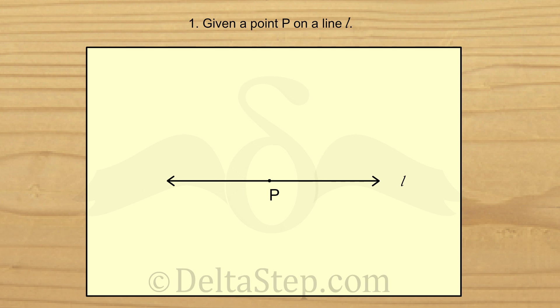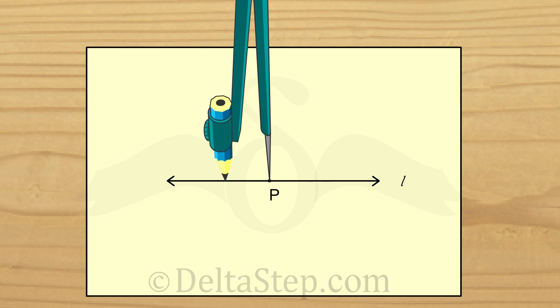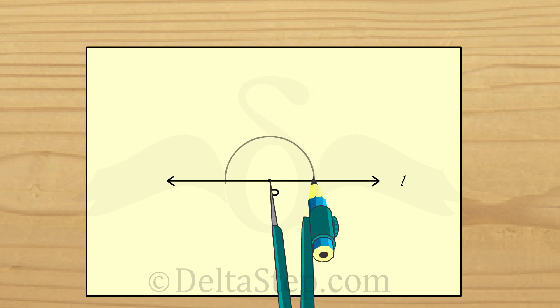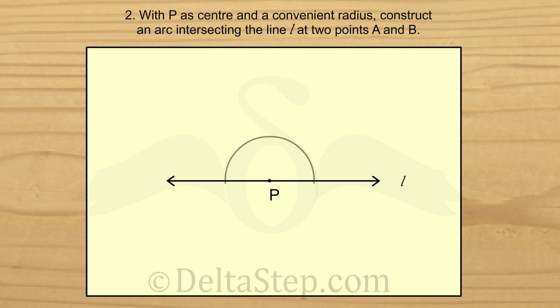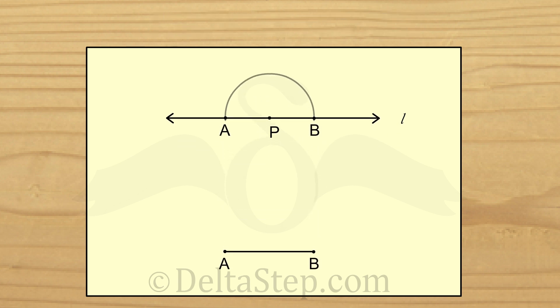In order to do that, we first take a convenient radius on our compass. That is any convenient radius neither too big nor too small. And with P as the centre, we draw an arc intersecting the line L at two points. Let us call these points of intersection A and B. Thus, we now have a line segment AB of length twice the radius of the arc that we took on the compass.